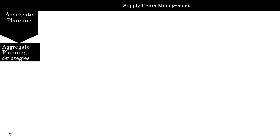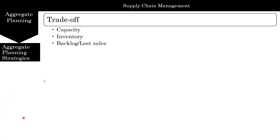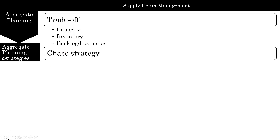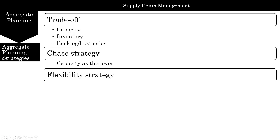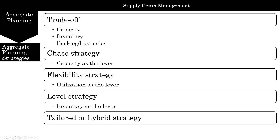I want to talk about three theoretical strategies. For the project, you're going to do a hybrid method — you won't be doing what we call pure strategies. But these pure strategies are important for understanding the levers you have to manipulate capacity. The three levers are capacity, inventory, and backlog of sales. The first strategy is the chase strategy, using capacity as a lever. Then there's the flexibility strategy, where you manipulate utilization. Then there's the level strategy, where inventory is the lever. Finally, there's the tailored or hybrid strategy, which is a combination of all three — and in reality, when you run your optimization, this is where you're going to be.